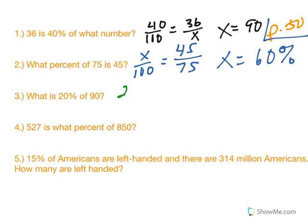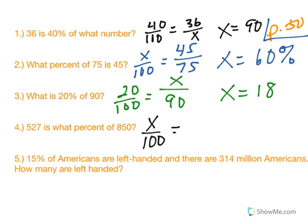Number three. 20% over 100, of 90. Missing piece is x, and we come up with a value of 18. What percent? 527 is of 850. And we come up with 62%. So hopefully those first four worked out pretty well for you.